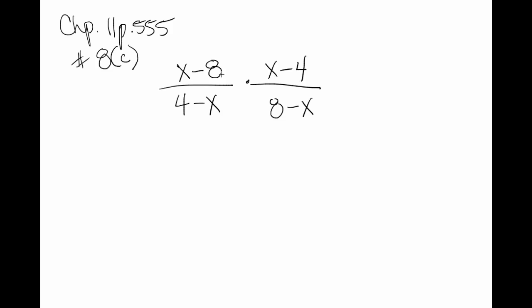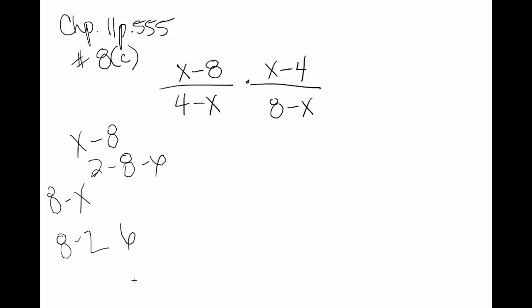Because x minus 8 and 8 minus x are not going to be the same number. And you can prove that to yourself by assigning a number to x and just checking. If x was 2, that would make this 2 minus 8 and this 8 minus 2. This is negative 6, and that's positive 6, which are obviously not the same number.